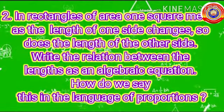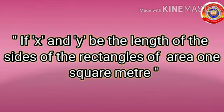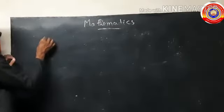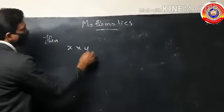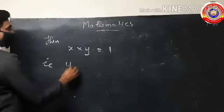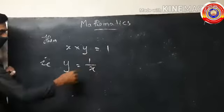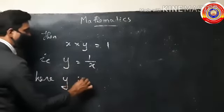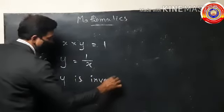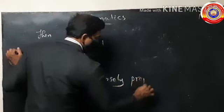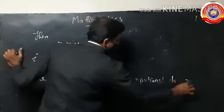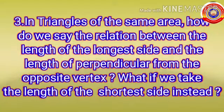In the second question, we have to write down the relation between the lengths of a rectangle with the same area. If x and y are the lengths of the sides of rectangles of area 1 square meter, then x × y = 1, that is y = 1/x. Here y is inversely proportional to x.